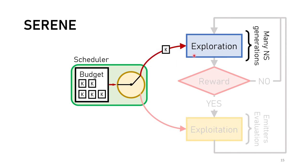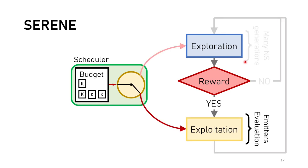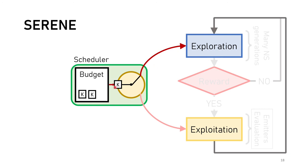SERENE starts by assigning the first chunk to the exploration step, where Novelty Search explores the space. If no reward is found, the algorithm performs the exploration step again with another budget chunk. If a reward is found, the next chunk is given to the exploitation step, where the policies that discovered the reward are used to initialize emitters that perform local search and optimize on the reward. Once this budget chunk is depleted, we return to the exploration step, repeating this alternating process until the whole budget is depleted.